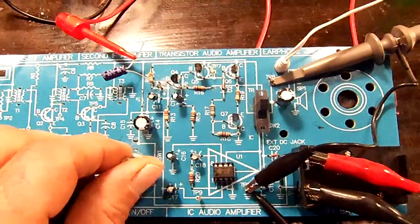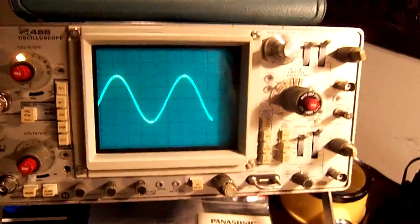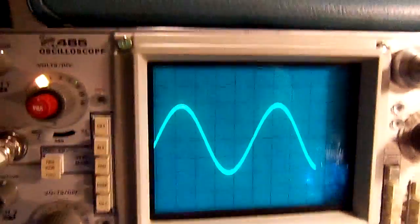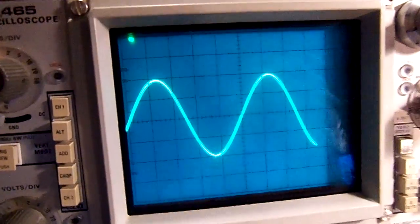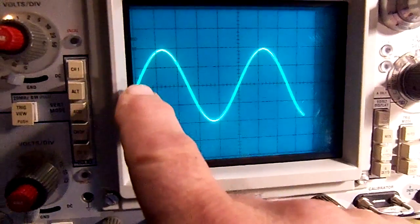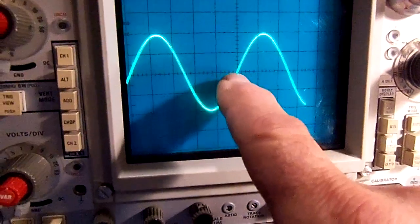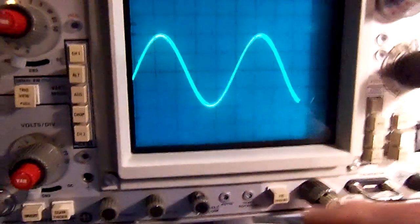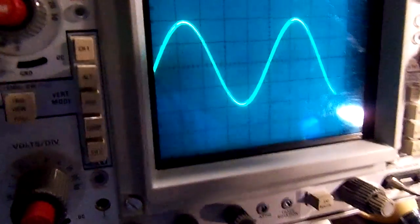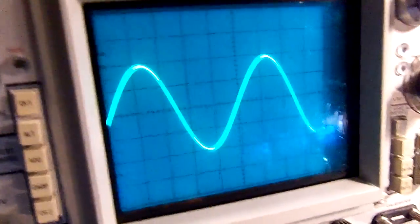And the problem I'm having is this is 0.2 microseconds per division and according to the scale it's 1,001 kilohertz and at 0.5 volts per division is 2 volts.